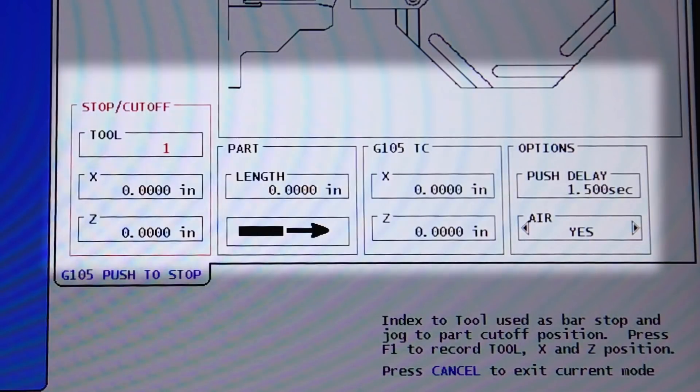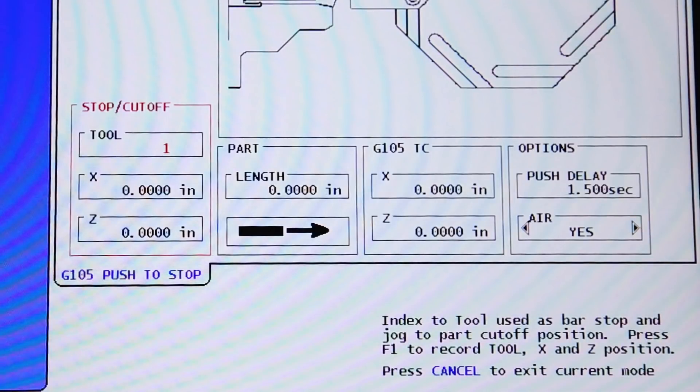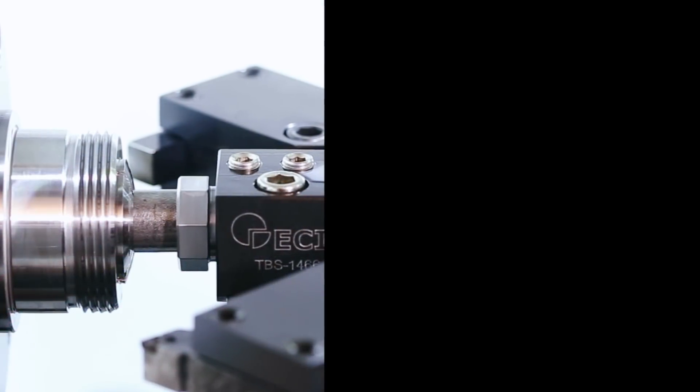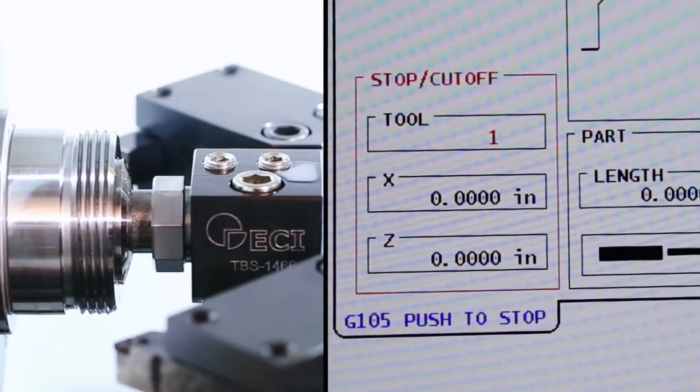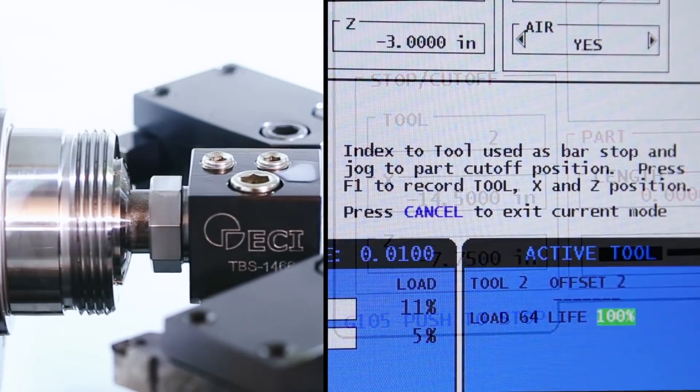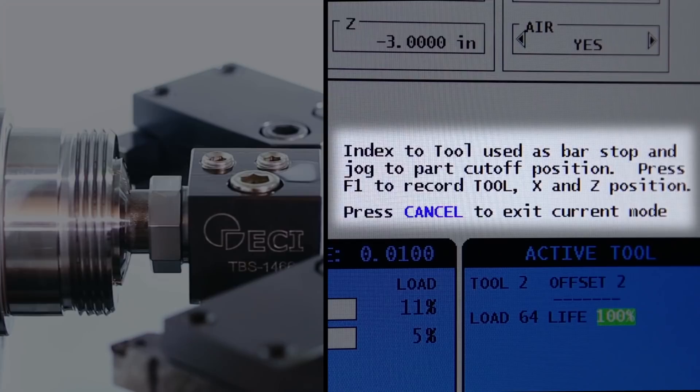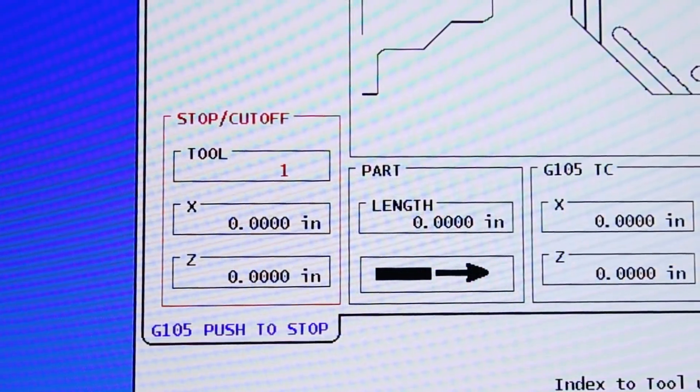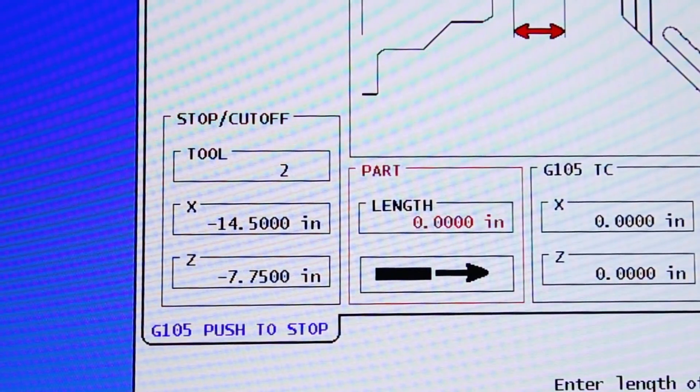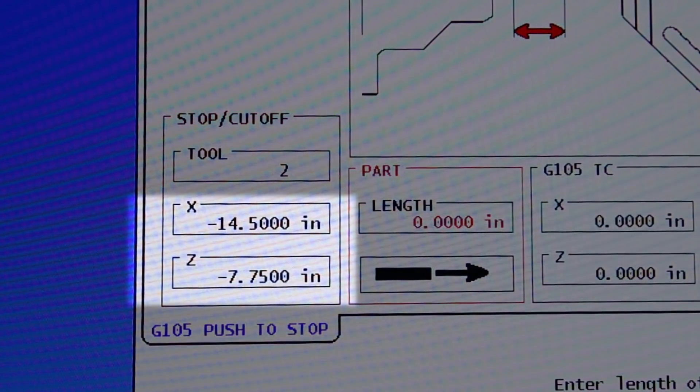One, two, three, four. Now we've already set up the machine mechanically for the bar pusher. Now we just got to let the control know when and where to push. With our stop jogged up against our material at the cutoff position and column one highlighted, we're just going to read and follow the onscreen instructions. It says index to tool used as bar stop and jog to part cutoff position. Press F1 to record tool X and Z position. Pressing F1 on the stop cutoff column sets our stop position on the turret and records our stop's machine position, my X and Z, for that stop.